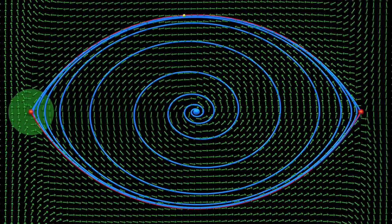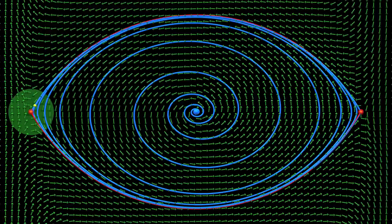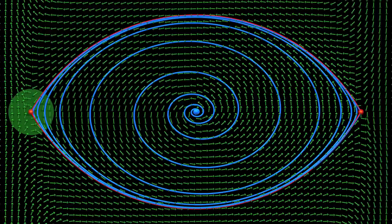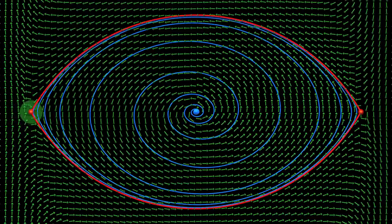As you see, there is no convergence. So there is no Sinai-Ruel-Bowen measure. What should we do? Shall we abandon this idea? Say that Lorenz was mistaken?